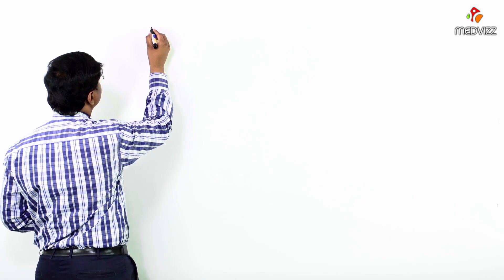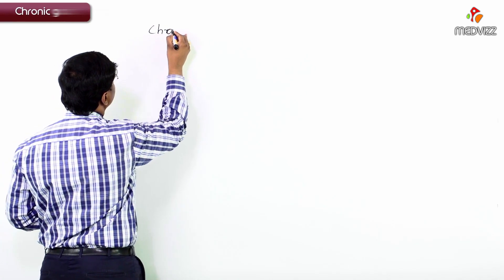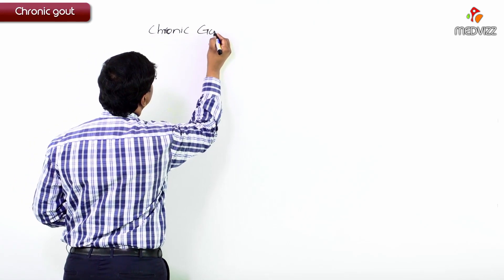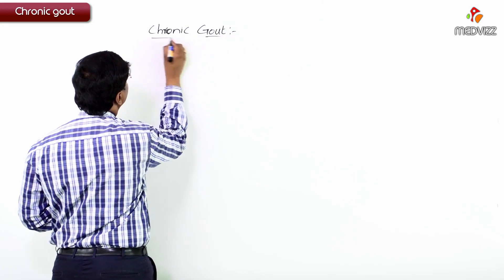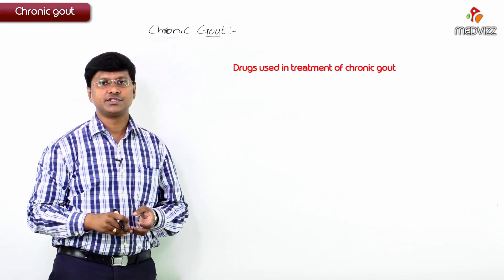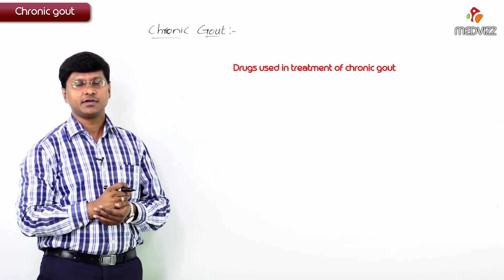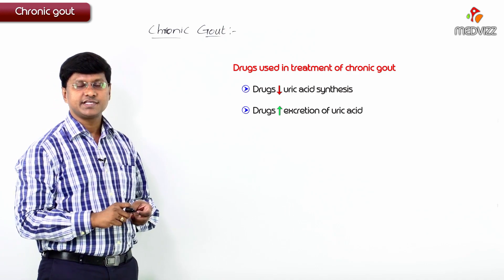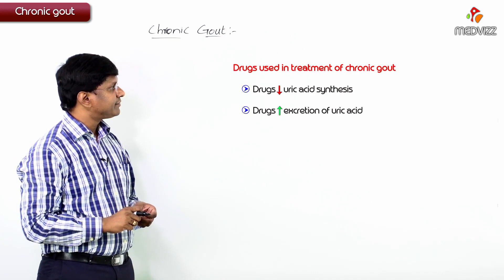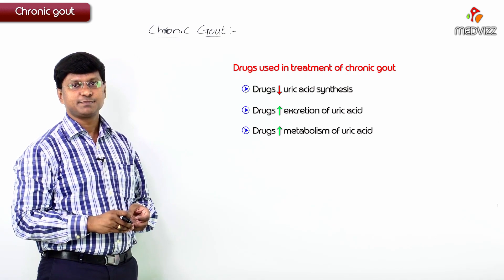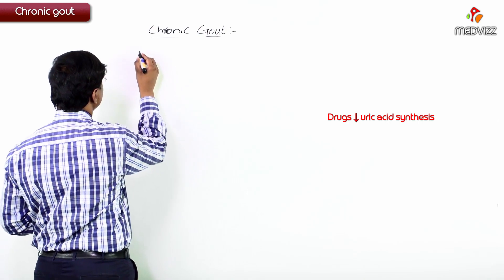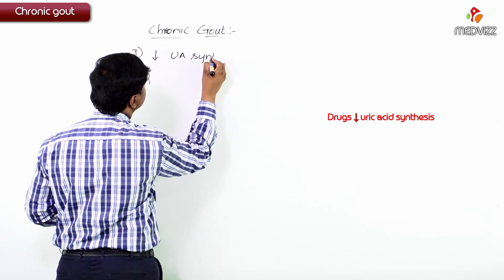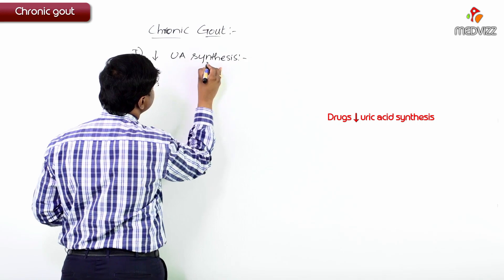Let me discuss the drugs used in the treatment of chronic gout. The strategies we have discussed include: a group of drugs which will decrease the uric acid synthesis, a group of drugs which will increase the excretion of uric acid, and a group of drugs which will increase the metabolism of uric acid. First, let me discuss the group of drugs which will decrease the uric acid synthesis.